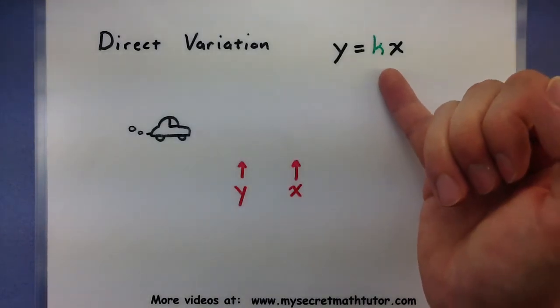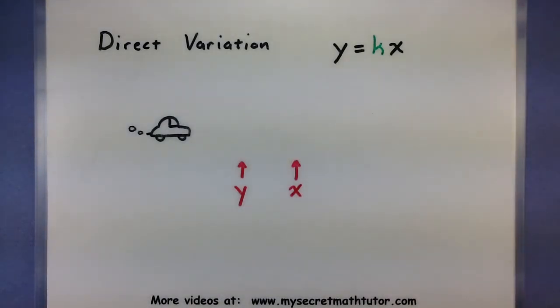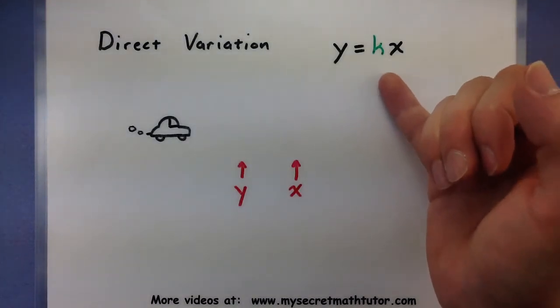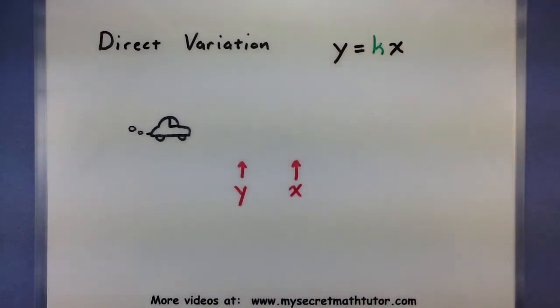Now what is the k's job in all of this? Well, that's because just because y goes up doesn't mean that x is going up at the same rate. For example, think of our little car example. You know, every minute I drive doesn't mean I go exactly one mile further. You know, maybe I actually go two miles or three miles. And so the k will actually fix that relationship between the x and the y.